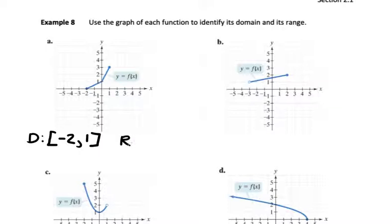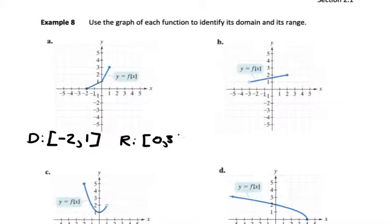For the range of part A, we're looking at the y-coordinates. The smallest y-coordinate is 0 and the graph goes from 0 up to 3. Both endpoints are included because we have solid circles. So the range is: square bracket, 0, comma, 3, square bracket.